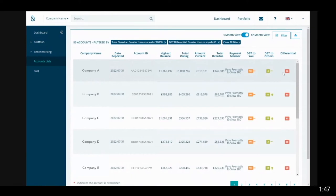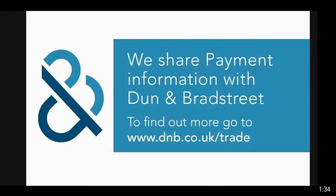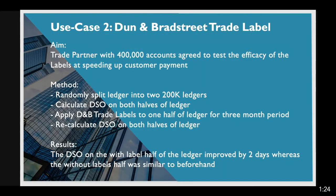So that's the first use case. The second use case we're going to look at today involves our trade payment labels, which are licensed for use to all of our partners free of charge. The labels simply state that you are sharing payment data with Dun & Bradstreet. Partners have told us that by using the label on their invoices or statement reminders, they have seen an improvement in their collections. A few years ago, we decided to carry out a test to demonstrate the efficacy of applying these labels.